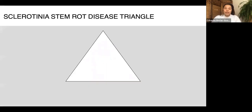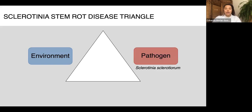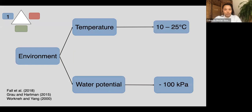Using the disease triangle, we can see that three main conditions are required for an epidemic: a favorable environment, a source of pathogenic inoculum, and a susceptible host crop. In terms of environment, sclerotinia stem rot develops when temperatures are cool to moderate and humidity is high. However, at the field level things are more complicated — it's not just a matter of looking at temperature and assuming no risk above 25°C.